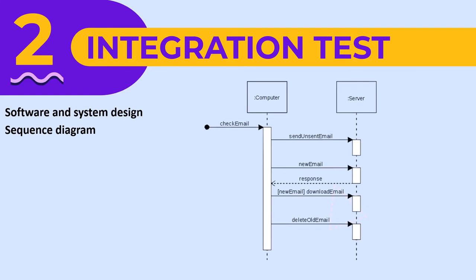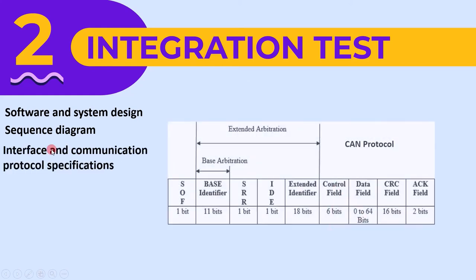The next requirement is a sequence diagram. A sequence diagram helps the tester to understand how data flows through the interfaces. The third requirement is interface and communication protocol specifications. If you are using any specific protocol for communication with other modules, you need the protocol specification to conduct integration testing on the interface.